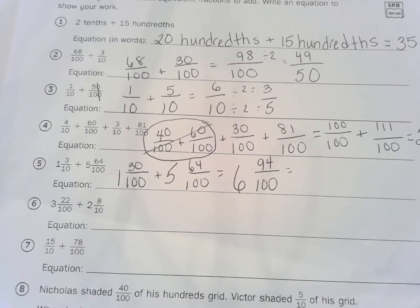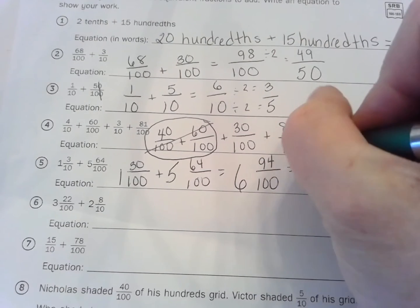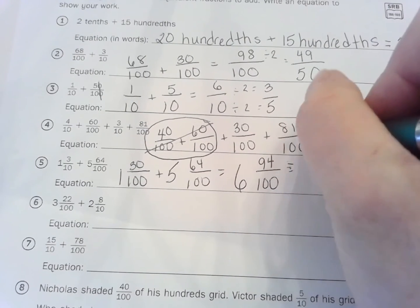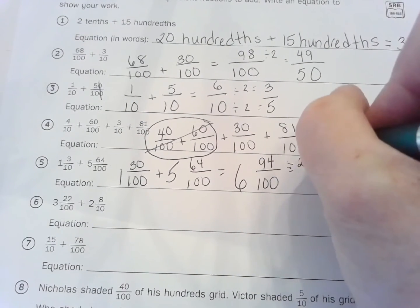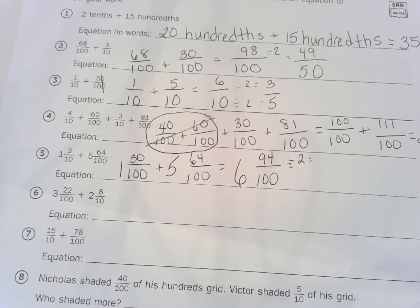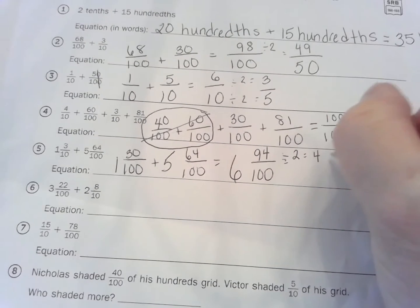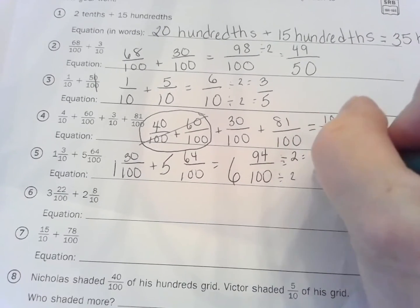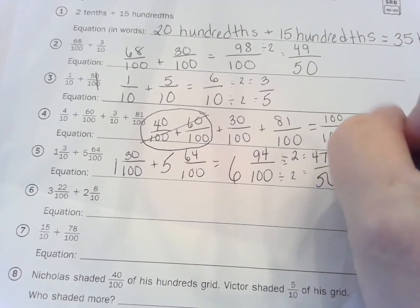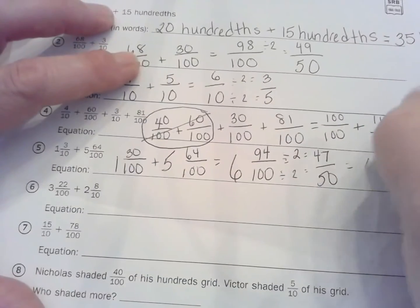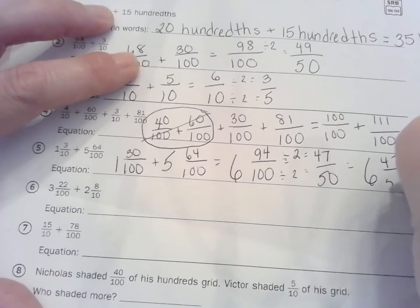Oh but wait, we can simplify that some more, can't we? 94 divided by 2 equals, 45 and 45 is 90, half of 4 is 2, so 45 plus 2 is 47. And 100 divided by 2 is 50, so it's going to be 6 and 47 fiftieths.